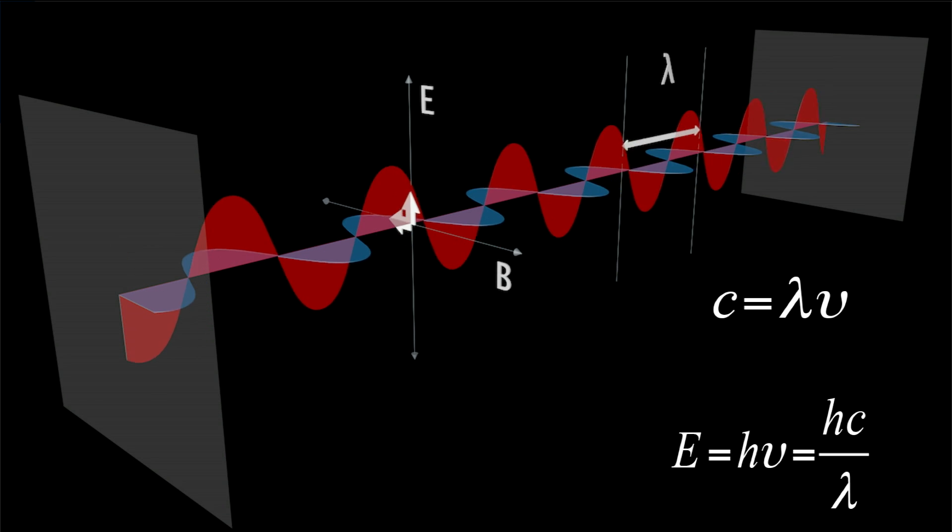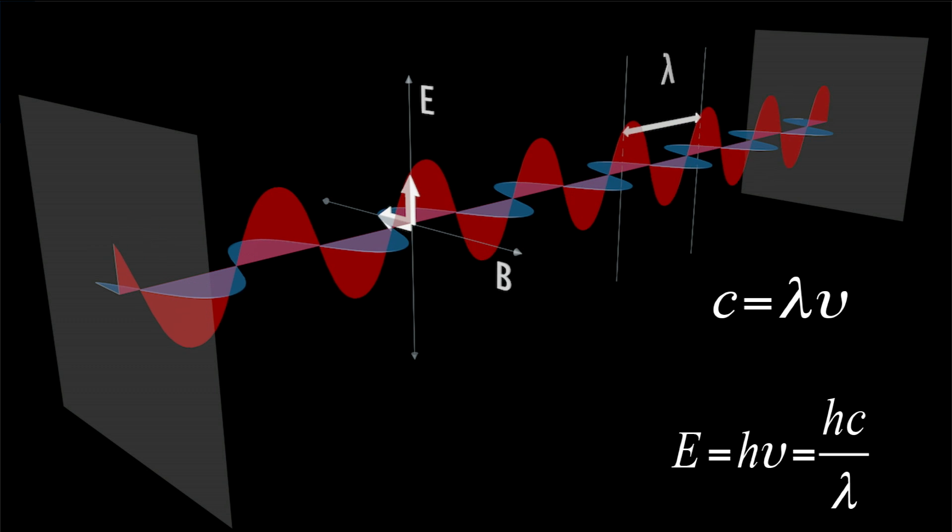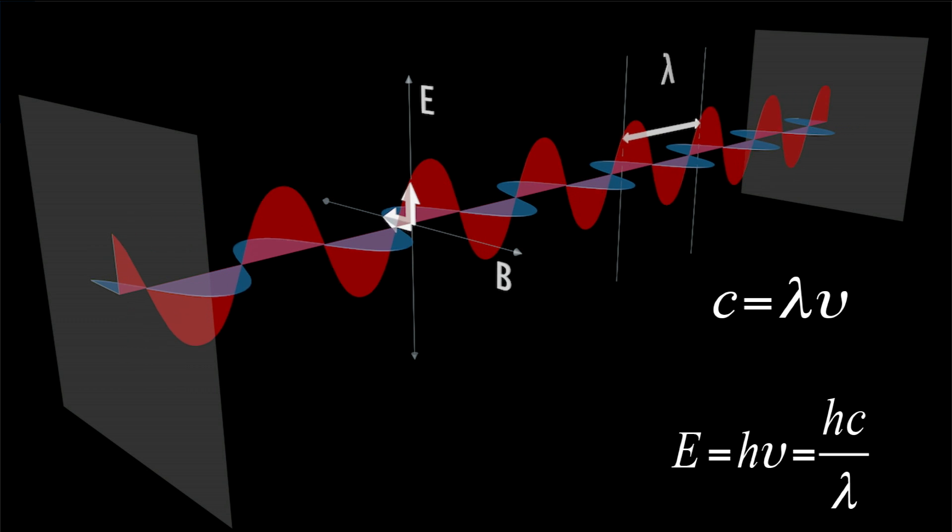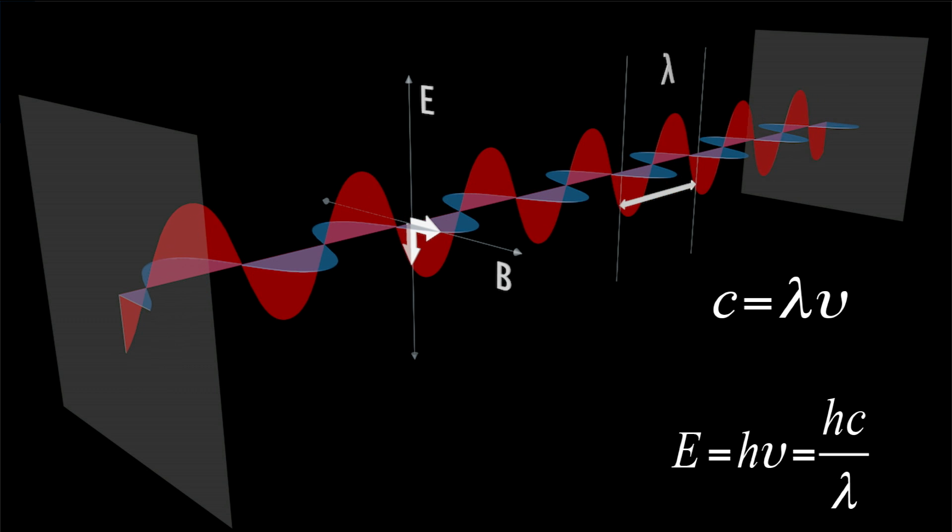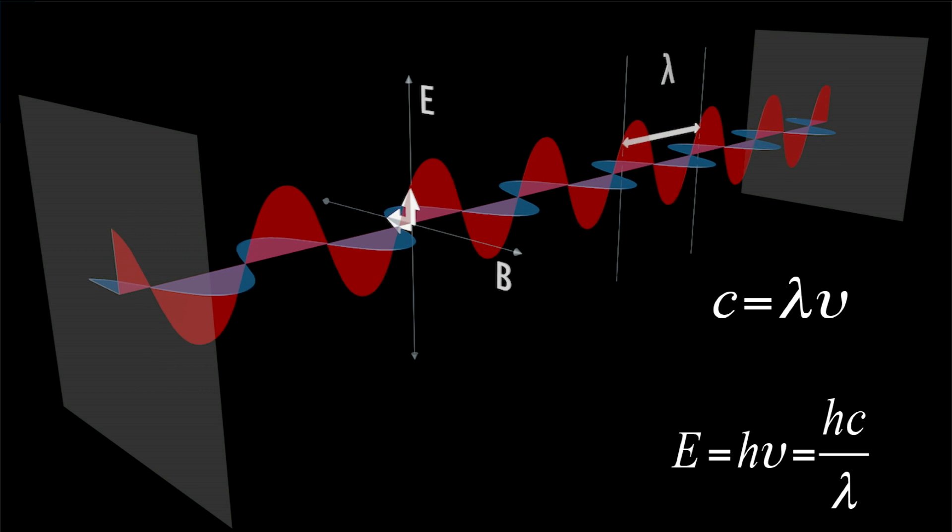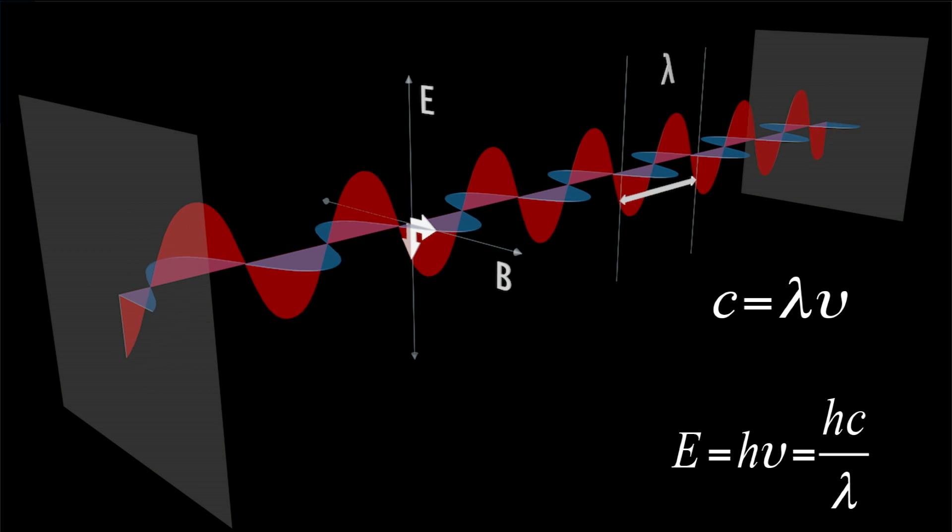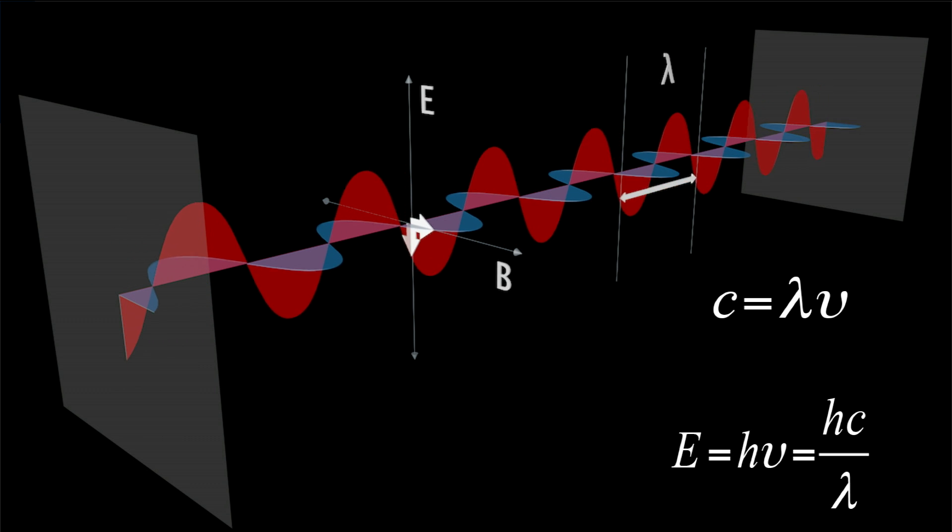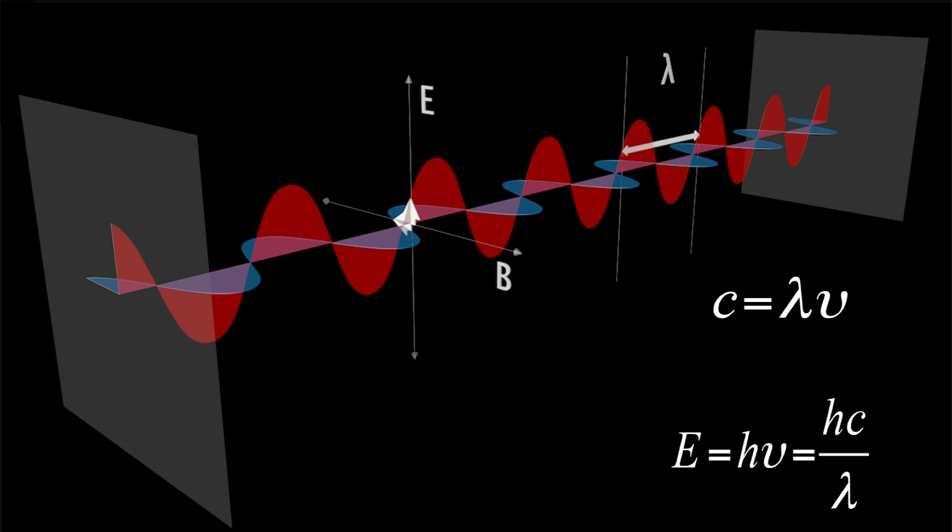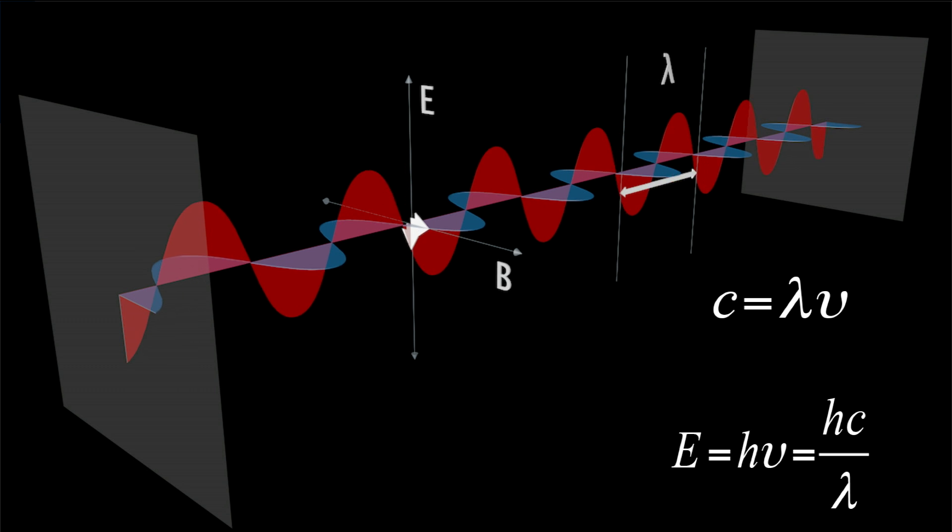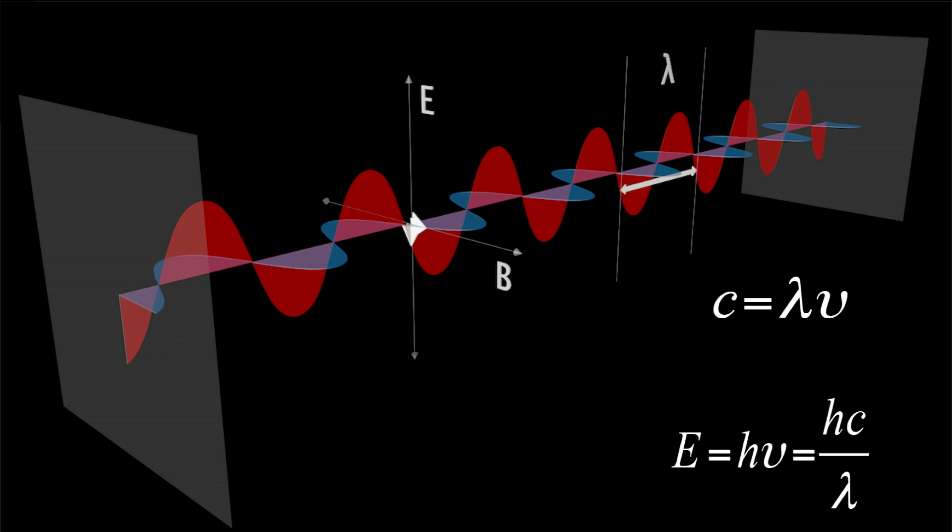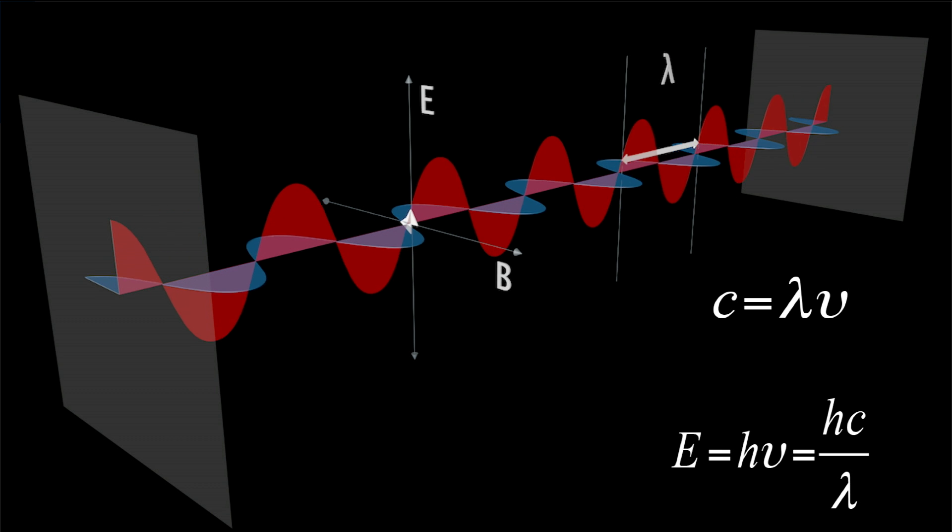Now we describe light as a wave. Light can be represented by an electromagnetic wave. Here we see an electromagnetic wave traveling in direction x. Perpendicular to this direction we see that an electric field E is oscillating. Perpendicular to the direction of propagation and the oscillating electric field, a magnetic field B is oscillating.